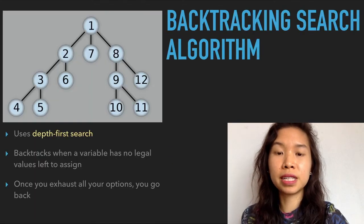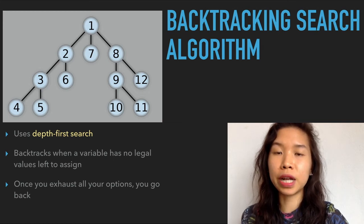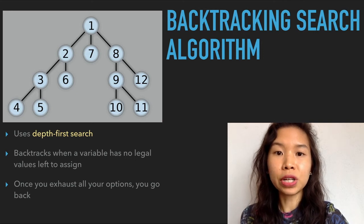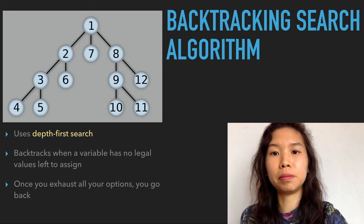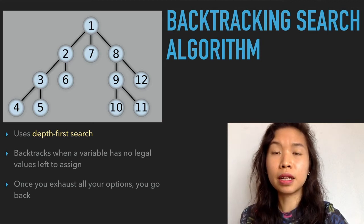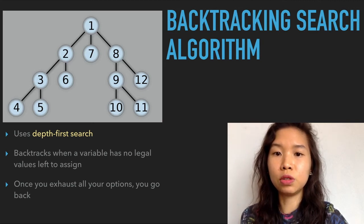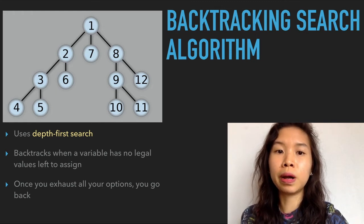Backtracking uses a depth-first search that chooses values for one variable at a time and backtracks when a variable has no legal values left to assign. In backtracking algorithms, you try to build a solution one step at a time. If at some step it becomes clear that the current path cannot lead to a solution, you go back to the previous step and choose a different path.